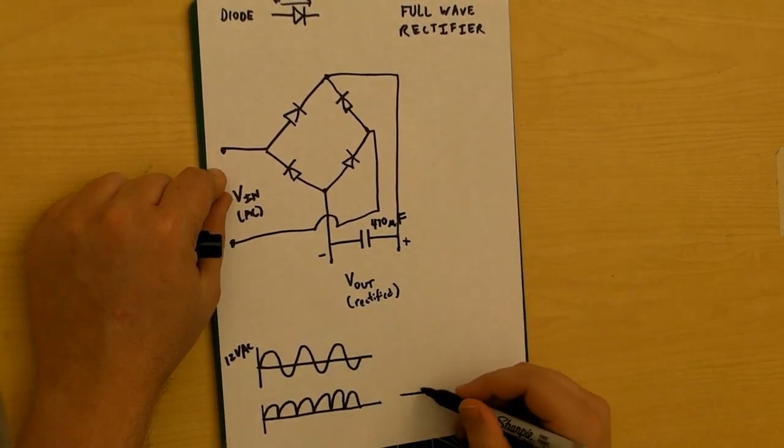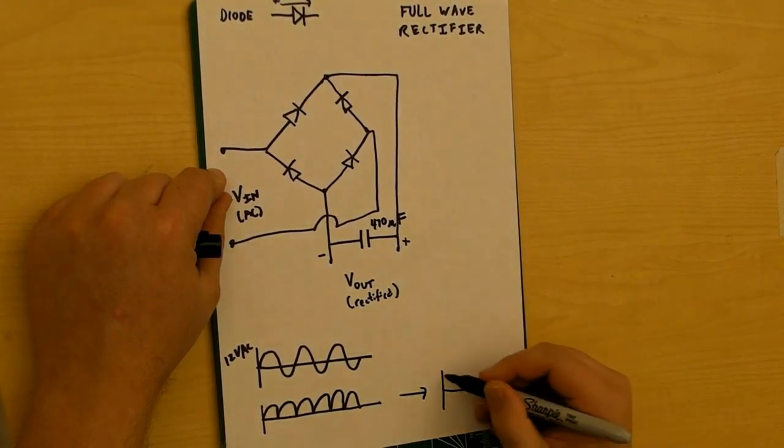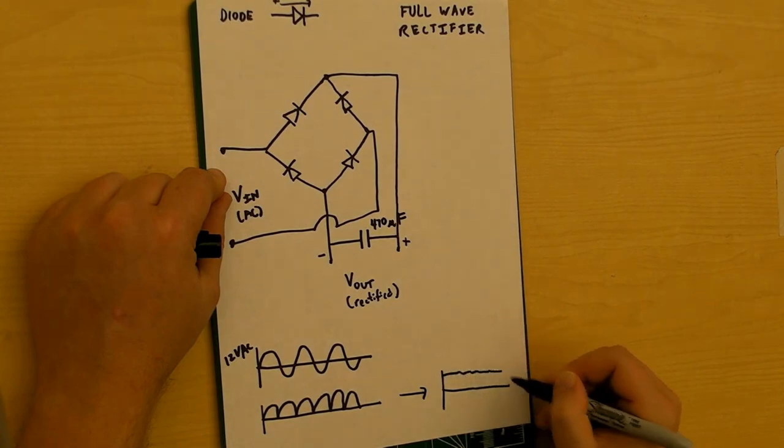What will happen after you add the capacitor is it will start looking like this with just little bits of ripple in it. Because that's our goal.